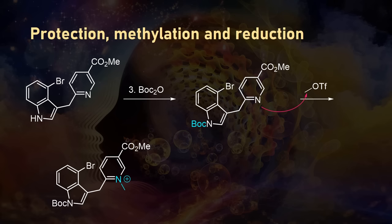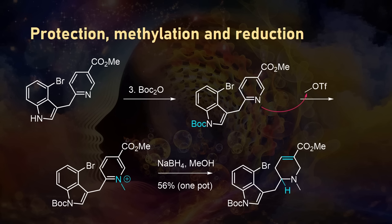Two hydride equivalents are accepted by the ring. The first one gives the reduced tertiary amine that is part of lysergic acid, and the second hydride reduces one of the double bonds, leaving an alpha-beta unsaturated ester. All of this happened in the same reaction vessel, so the authors were a bit sneaky and categorized it as just one single step.